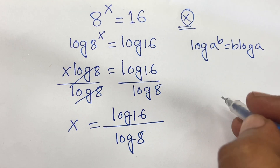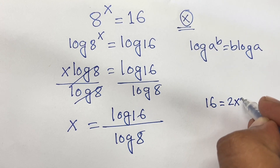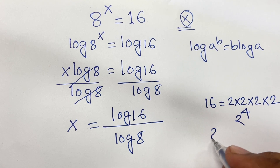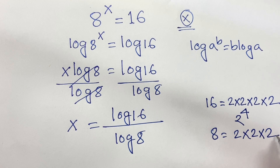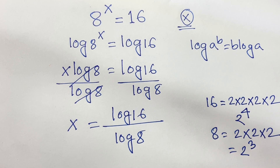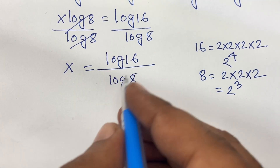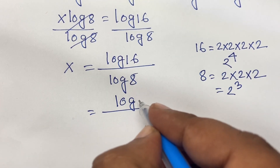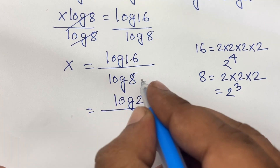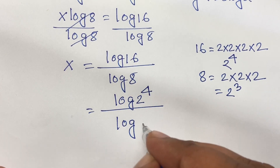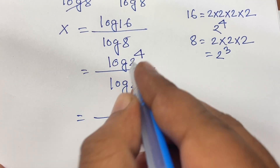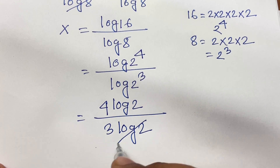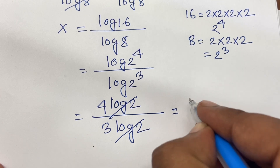Now, 16 equal to 2 times 2 times 2 times 2, so this is 2 to the power 4. And again 8 equal to 2 times 2 times 2, so here is 2 to the power 3. I can say log 16 is the same as log 2 to the power 4, and log 8 is the same as log 2 to the power 3. According to log rules, this becomes 4 log 2 over 3 log 2. Log 2 and log 2 cancel, so here is 4 over 3.